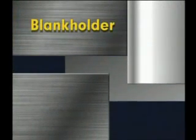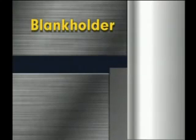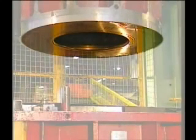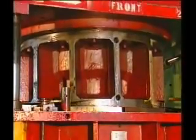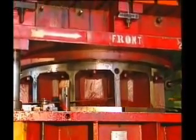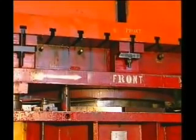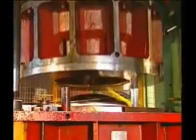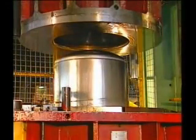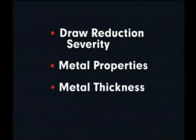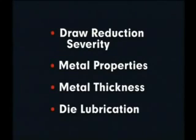To prevent buckling, the blank must be held tightly by a blank holder. On most forming presses, the blank holder is an outer ring through which the inner ram or punch passes. The blank holder holds the workpiece against the draw die to control metal flow as the punch forms the shape. In practice, the blank holder must exert less pressure against the blank than the punch so metal can flow into the die, yet enough pressure to prevent wrinkling. Factors determining necessary blank holder pressure include the severity of the draw reduction, metal properties and thickness, die lubrication, and other factors.